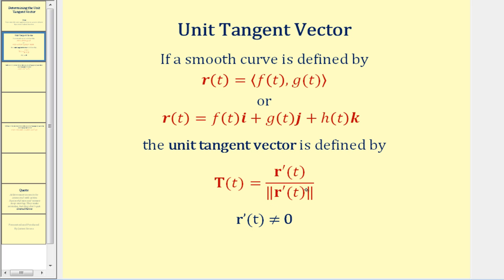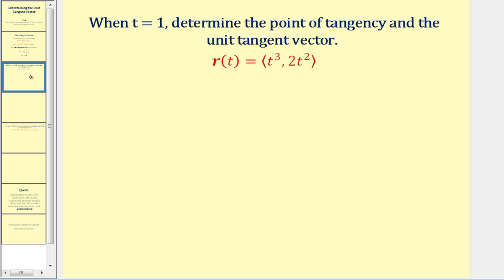The only special condition is that r prime of t cannot equal the zero vector. If each component of the derivative function equals zero, the curve will not be smooth at that point and we could not determine a tangent vector. Let's look at two examples: one with a plane curve and one with a space curve.